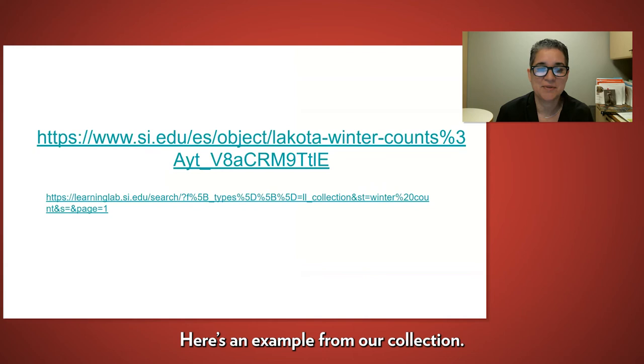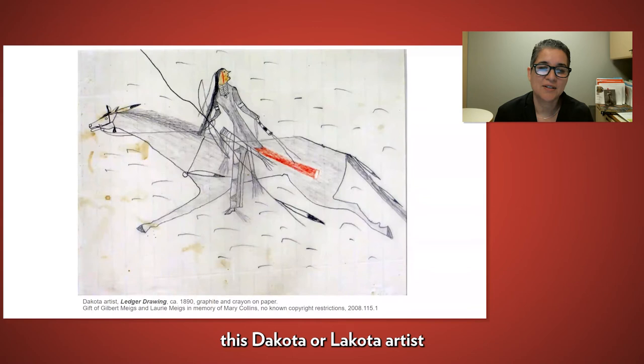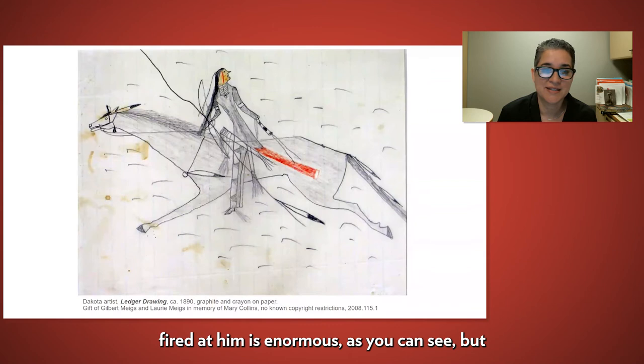In this drawing, this Dakota or Lakota artist has depicted a warrior on horseback, fleeing in a hail of bullets or arrows being shot at him by his enemy. The number of shots fired at him is enormous, as you can see, but he and his horse are both uninjured.